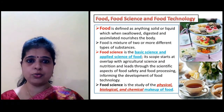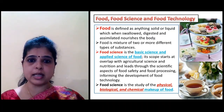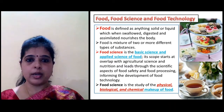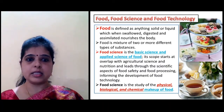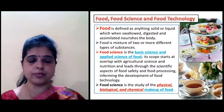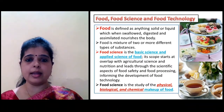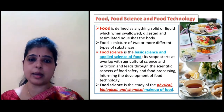What is food science? Food science is the basic and applied science of food, and its scope starts with overlap of agricultural science and nutrition, which leads to the scientific aspects of food safety and food processing, informing the development of food technology. Food science is the study of physical, biological, and chemical makeup of food.